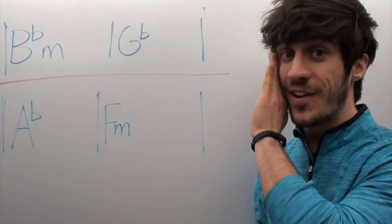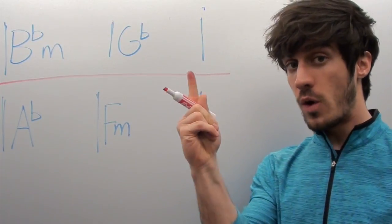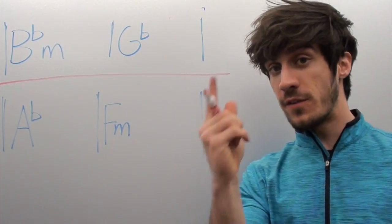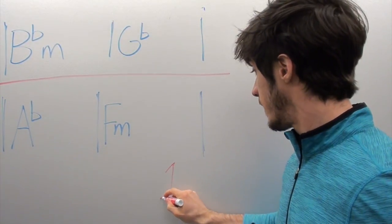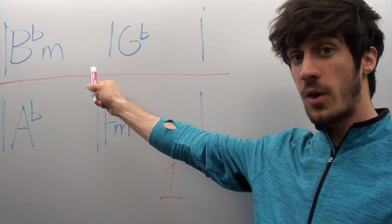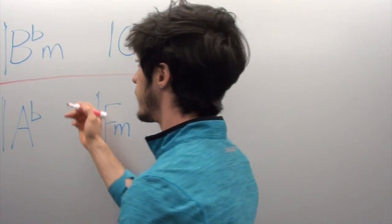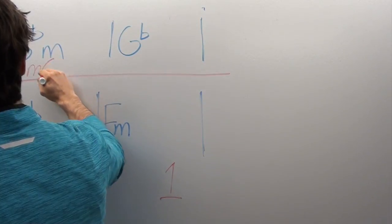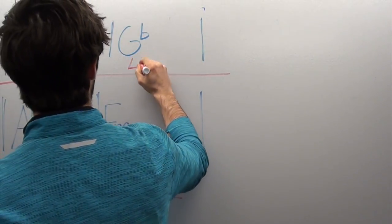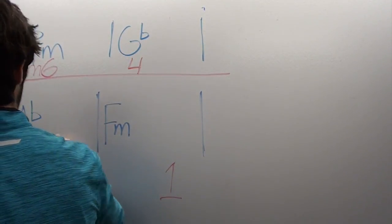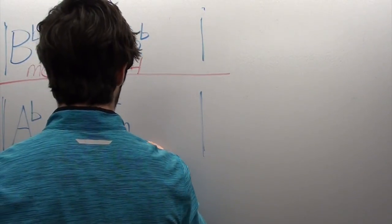I'll tell you for this song, we're in D flat. So D flat is our one. Once we know D flat is number one, we can figure out the numbers for all of these chords. I'll just write them down here. B flat minor is your minor six. G flat is your four. A flat is your five. F minor is your minor three.